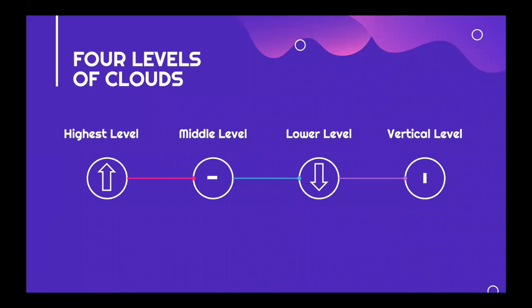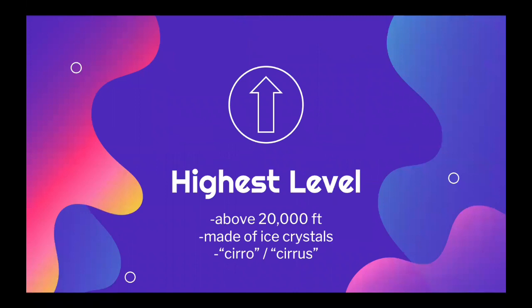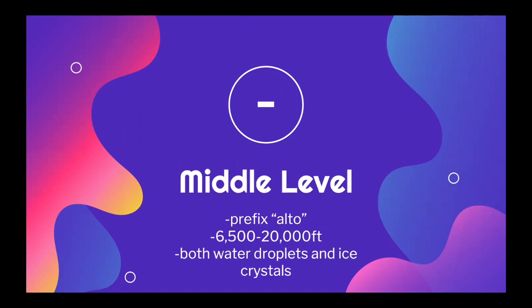So let's go over the four levels of elevation that you might be able to see a cloud. The highest level clouds form above 20,000 feet. Since they're so high up it's usually pretty cold, which means they're usually made of ice crystals. Also on this level, clouds usually have a name starting with cirra or cirrus. The next level a cloud may be seen on is the middle level, where clouds usually have the prefix alto in their name. These clouds form between 6,500 and 20,000 feet and they can be made of both water droplets and ice crystals.